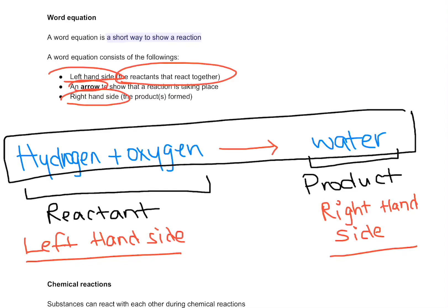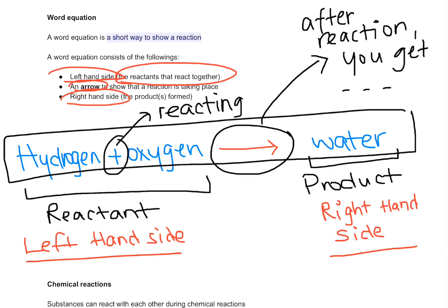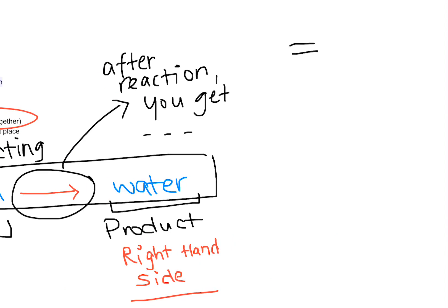This is the word equation, and in a word equation you have a plus sign. The plus sign means that they are reacting together. And the arrow means that once the reaction is over, this is what you're going to get. Now you always need to use an arrow — do not use the equal to sign.